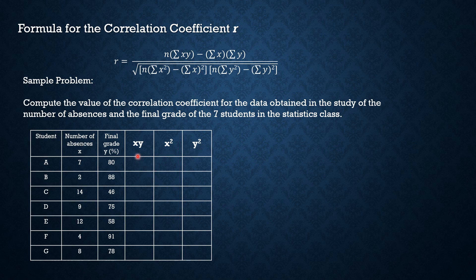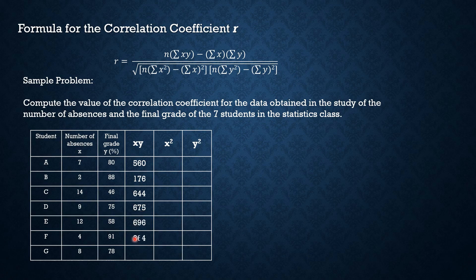To complete the xy column, we multiply the number of absences, x, by the final grade, y, for each student. 7 times 80 is 560; 2 times 88 is 176; 14 times 46 is 644; 9 times 75 is 675. Continue this process for the remaining students.